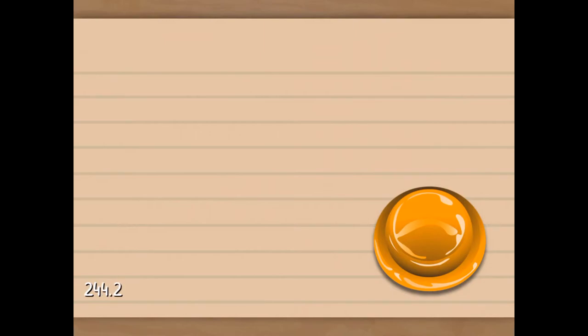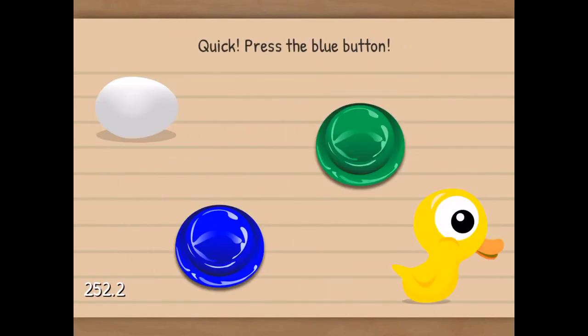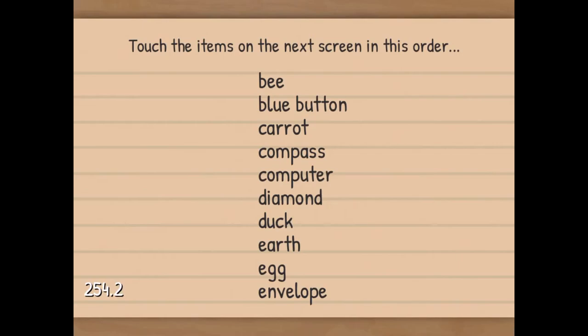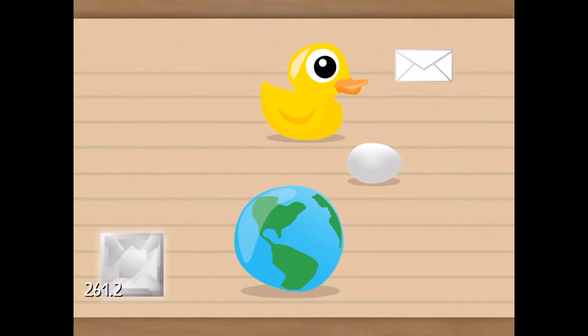One, two, three, four, five, six, seven. It's so hard. Eight, nine, ten. Blue button. Anywhere. Baby. Blue button. Carrot. Oh. Carrot. I've been forgetting carrot. Baby. Blue button. Carrot. Compass. Computer. Not duck. It wasn't duck. What was it?